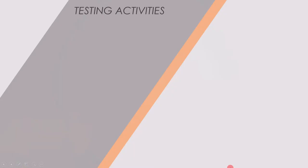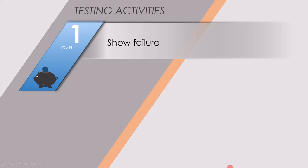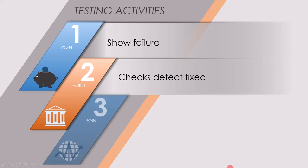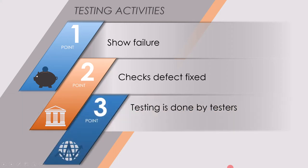First, we will have a look into testing activities. The most important activity of testing is to show failure, because one of the objectives of testing is to find defects. Finding defects is not the only activity of testing. Another activity is, once the defect is found, it is very much required to check if the found defect is fixed or not. And the last point is that testing is done by testers.